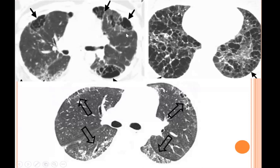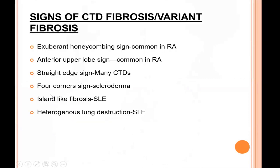Island-like fibrotic areas in the corners of the lung are commonly seen in systemic lupus erythematosus. Cystic lung destruction is also commonly seen in SLE. The four-corner sign — fibrosis involving the anterosuperior and posteroinferior corners of the lung — is described in the literature for scleroderma. These are signs of connective tissue disease-associated fibrosis or variant fibrosis, helping to identify an underlying connective tissue disorder associated with the UIP pattern.